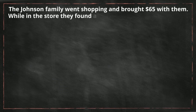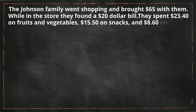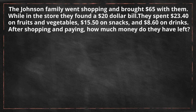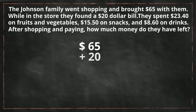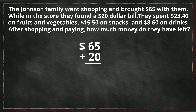The Johnson family went shopping and brought $65 with them. While in the store, they found a $20 bill. They then spent $23.40 on fruits and vegetables, $15.50 on snacks, and $8.60 on drinks. After shopping and paying for all the groceries, how much money do they have left? First, let's get the grand total of how much money they have. They had $65, but they found a $20 bill — whenever you receive money, you add that to your total. So $65 plus $20 is $85.